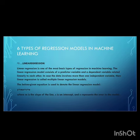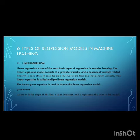The first one is linear regression. Linear regression is one of the most basic types of regression in machine learning. The linear regression model consists of a predictor variable and a dependent variable related to each other linearly. In cases where data involves more than one independent variable, linear regression is called multiple linear regression.